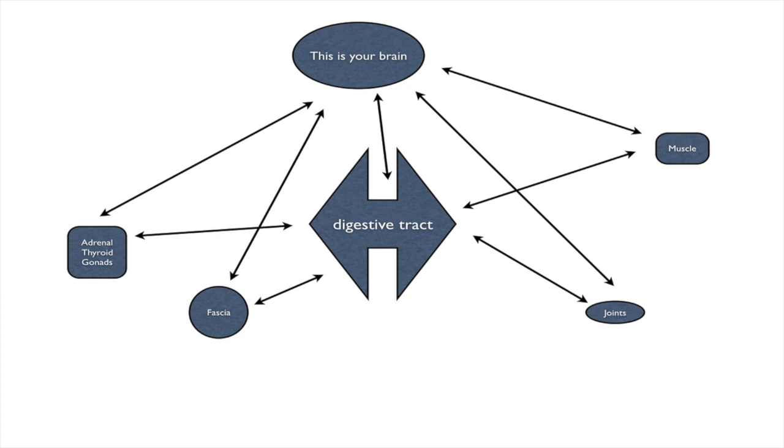So that's the first thing you need to understand as we embark on this program, that we're going to be doing interventions maybe in one place, but they will be impacting things in other areas. If you're focusing on the digestive tract, for example, it can have symptoms in the muscle and the joints and the fascia. And this is what we're going to be doing.